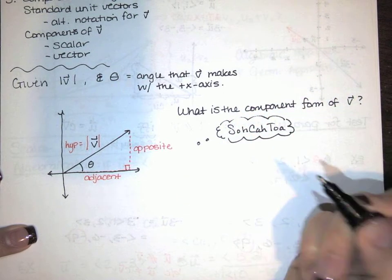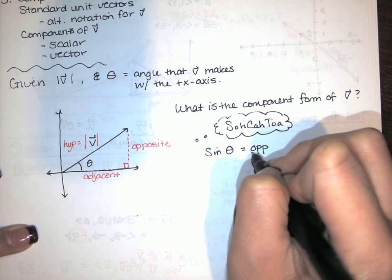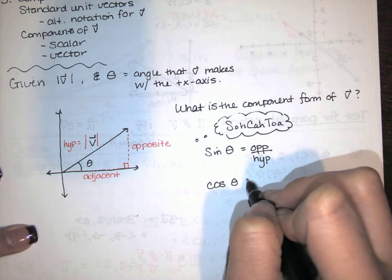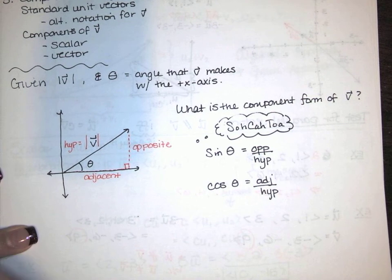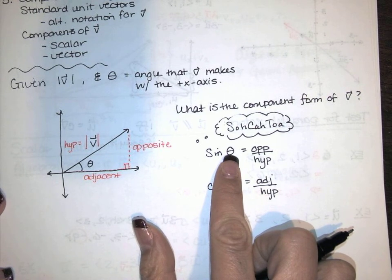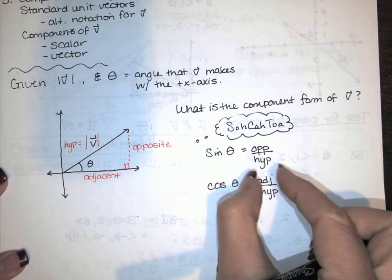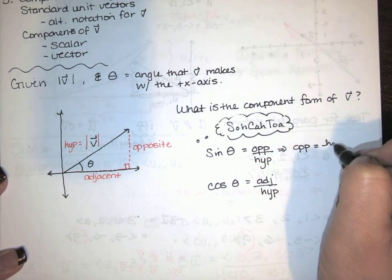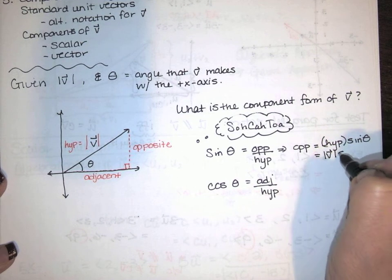Remember from trig you learned SOH-CAH-TOA. SOH-CAH-TOA reminds us that sine is opposite over hypotenuse, so sine of theta is the opposite side over the hypotenuse — the ratio of those two sides of the triangle. Cosine is adjacent over hypotenuse. Tangent is opposite over adjacent, but we don't have both of those so we're not going to use that. Now, it's assumed that we know theta. If I know theta is 45 degrees, I know sine of 45 is √2/2, so that's just a number. And the hypotenuse is known. If both are known, I just multiply by the hypotenuse to get the opposite side by itself. So the opposite side is the hypotenuse times sine of theta.